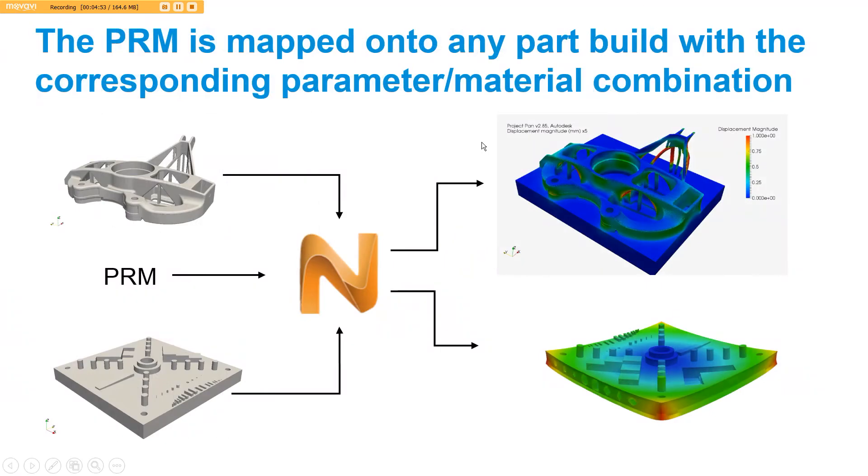Once we have that parameter file for the EOS machine's performance settings on TI-6-4, now anytime I go to build a geometry on the EOS machine using titanium with the performance setting, I can use this PRM file, input this into NetFab Simulation along with the CAD file, and the output will be the distortion of the part that I'm going to build.